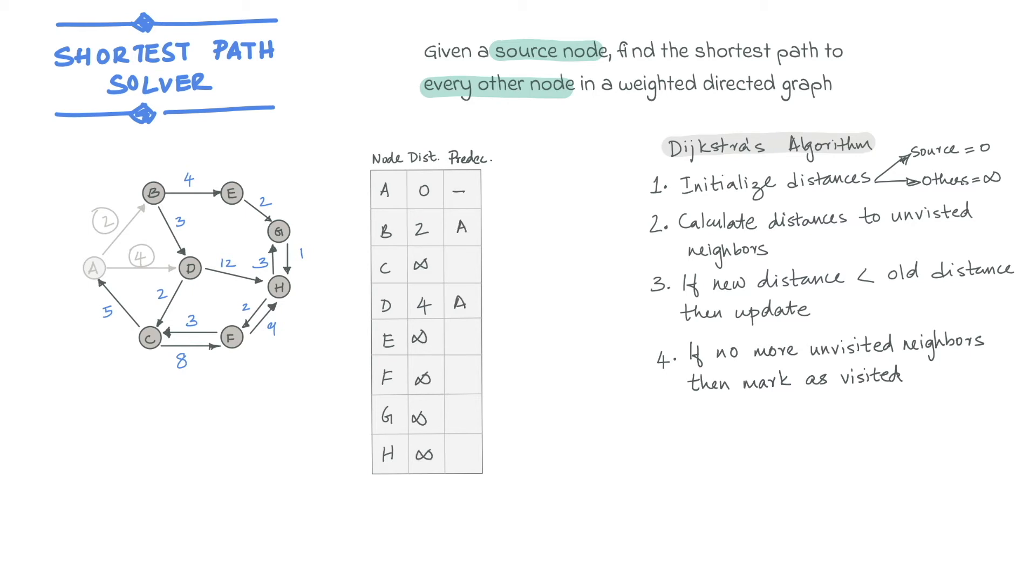Now we need to pick the next node to visit. The rule for this is that the next node should be the one which is the shortest distance from the starting node. This is B in our case.